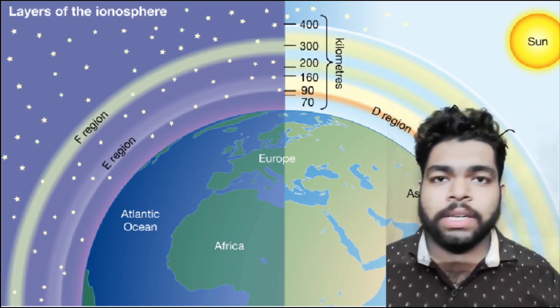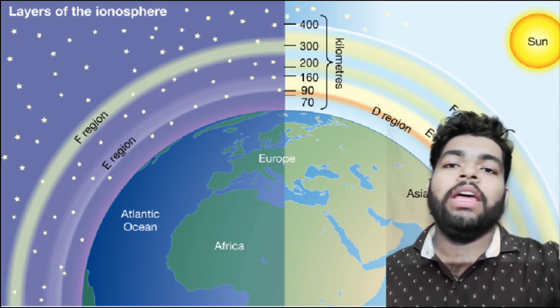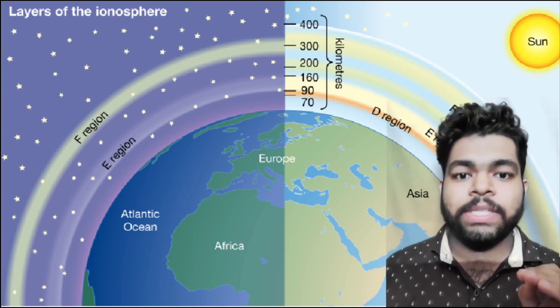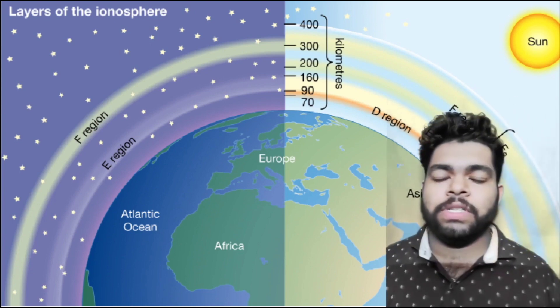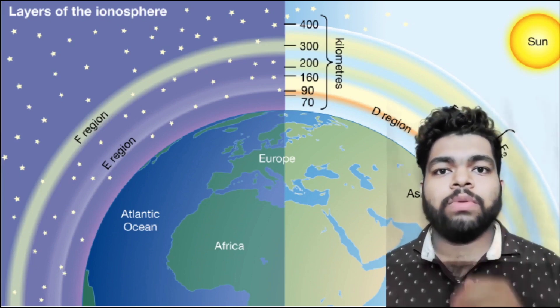The F layer is divided into F1 and F2 layers. The F1 layer is formed by ionization of oxygen atoms and absorbs high frequency waves. The critical frequency is 5 to 7 megahertz.